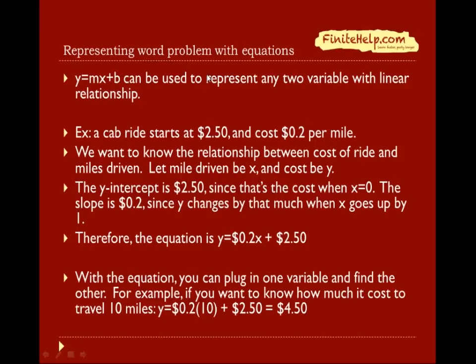Now we're going to learn how to use equations to represent word problems. When you have two variables with linear equations, then you can represent them in equations. Here's an example. A cab ride starts at $2.50 and costs $0.20 per mile. We want to know the relationship between the cost of the ride and the miles driven. Let miles driven be the x variable and the cost be y. The y-intercept is $2.50. That's what the cost is when x is 0. If there's no miles driven, you still have to pay $2.50. The slope is $0.20 because that's how much y goes up by when x goes up by 1. Here you have the equation: y equals 0.2x plus $2.50.